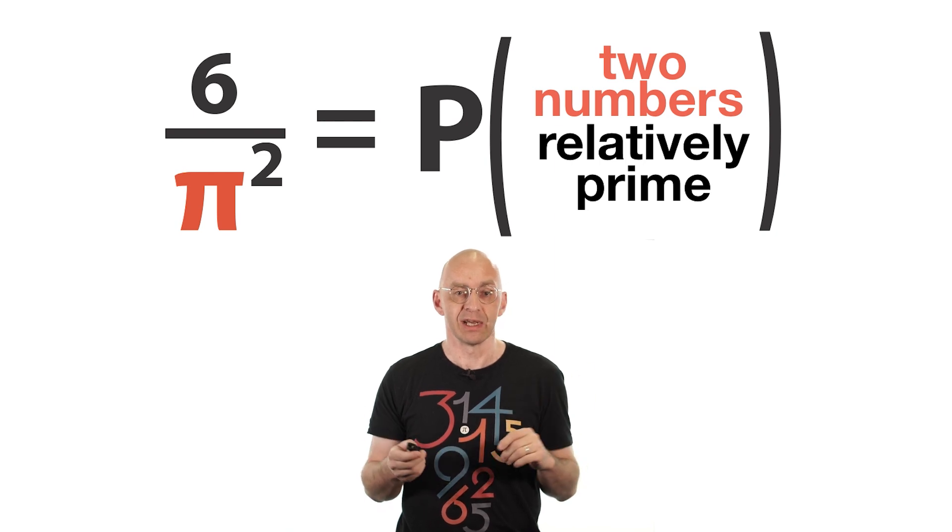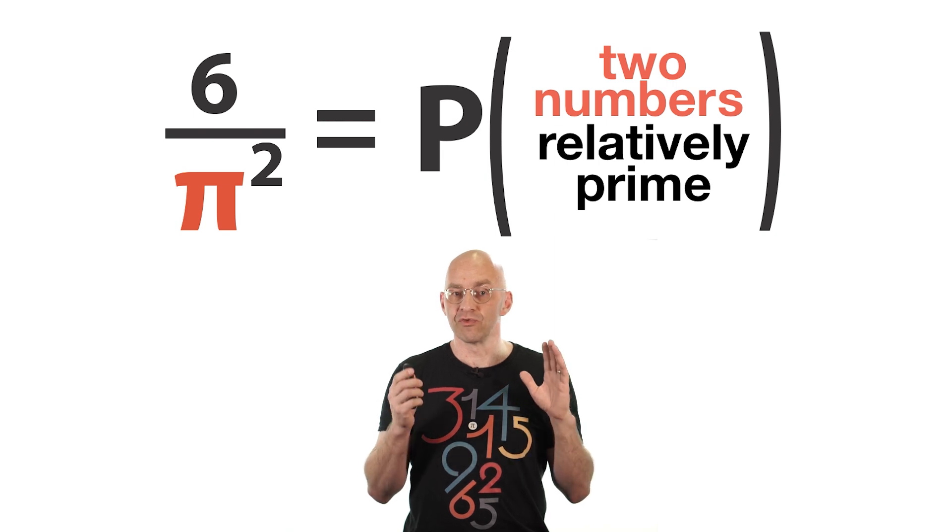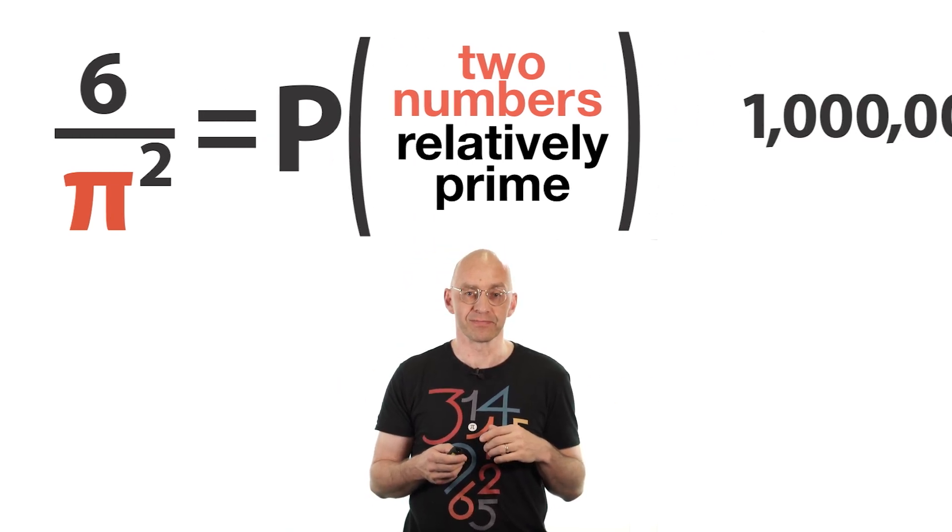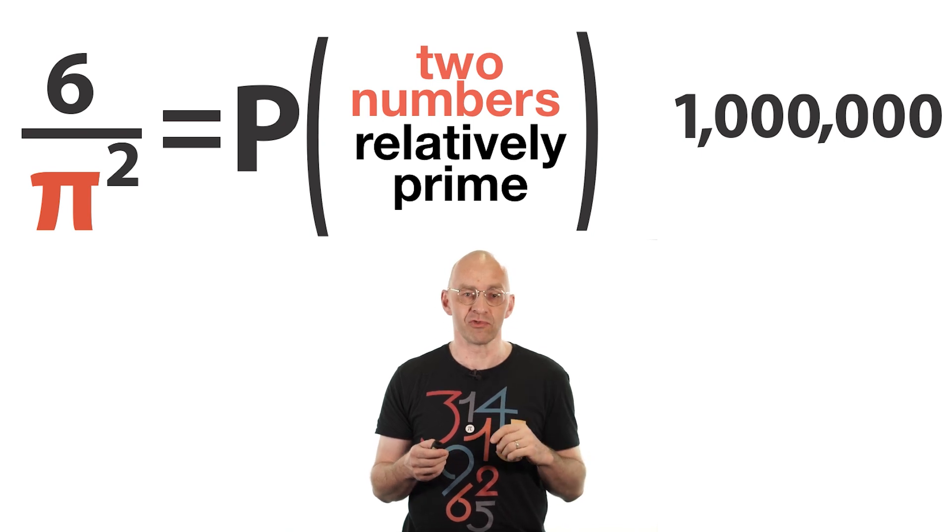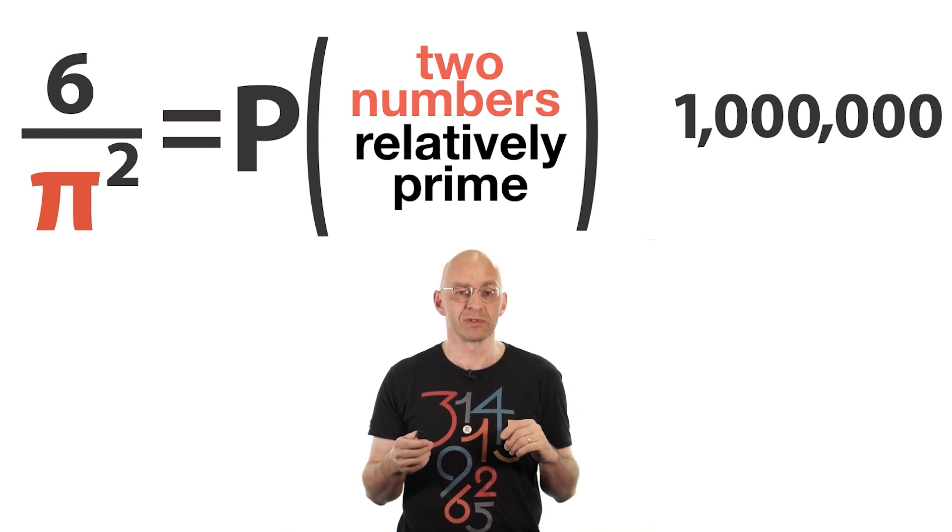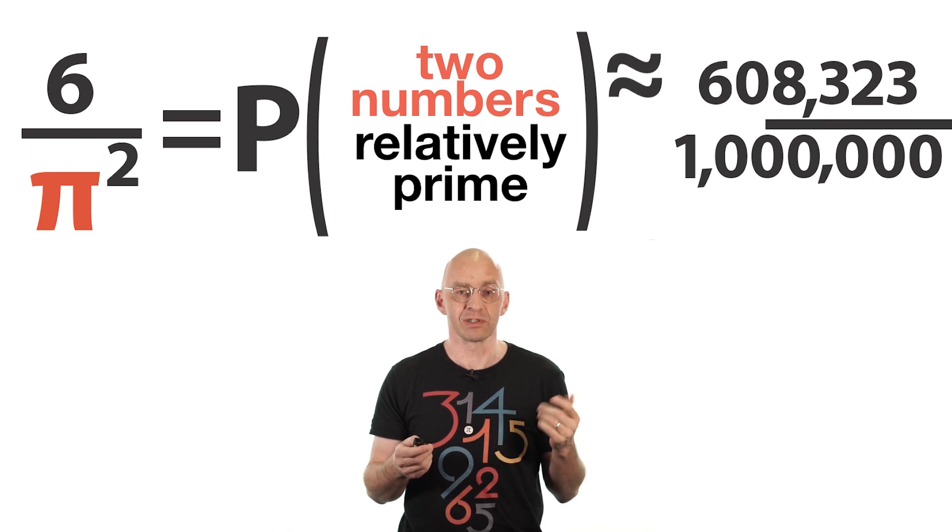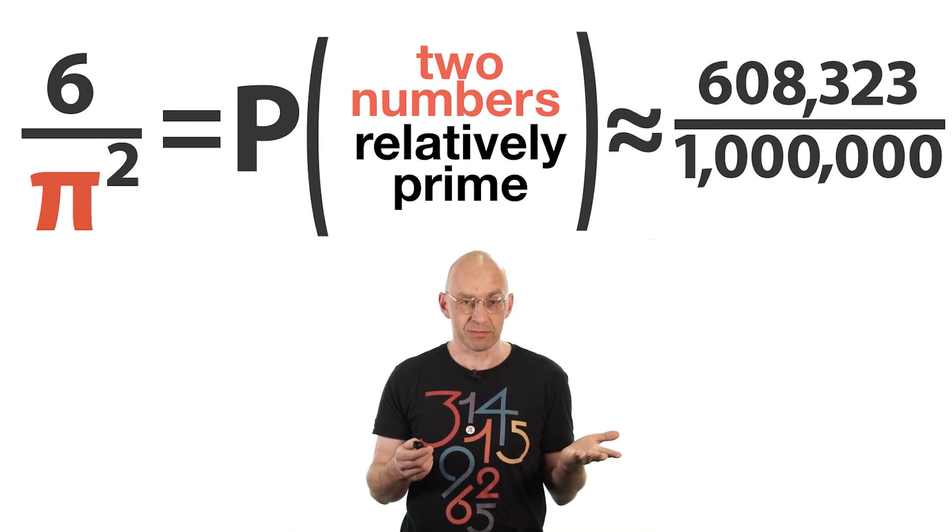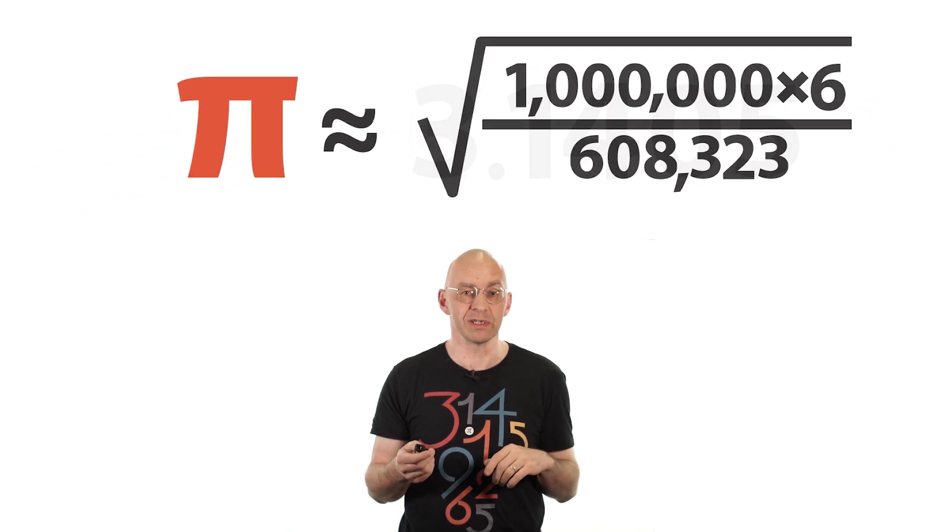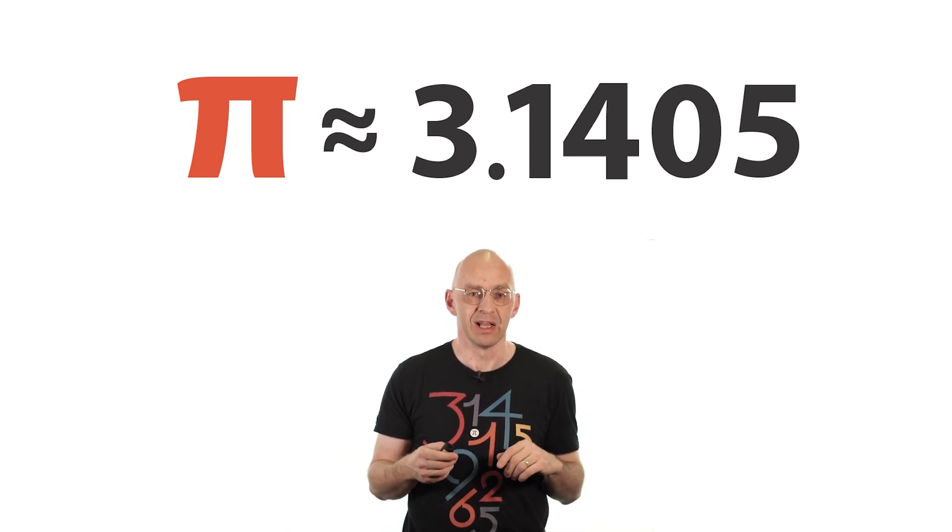Well, actually at least two of the ingredients of this proof need a little bit more justification. And, well, can you tell which? In any case, this result really is true and can be turned into a very very strange way to approximate pi. What you do is you randomly pick, say, a million pairs of natural numbers and calculate how many of these pairs are relatively prime. And I've actually run a simulation on Mathematica and that sped out, you know, 608,323. And then the probability is approximately, well, just this fraction here, which means that pi is approximately this expression here, which pans out to be 3.1405. Well, it's not great but it's not bad either.